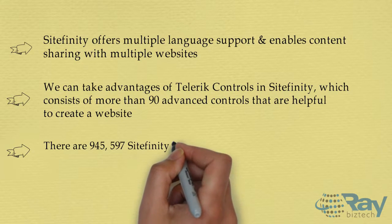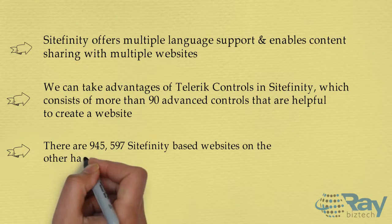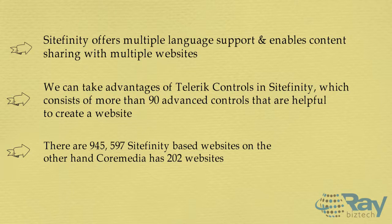There are 945,597 SiteMedia websites. On the other hand, CoreMedia has only about 2 notable websites.